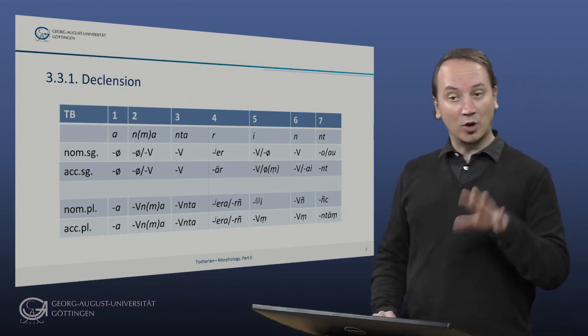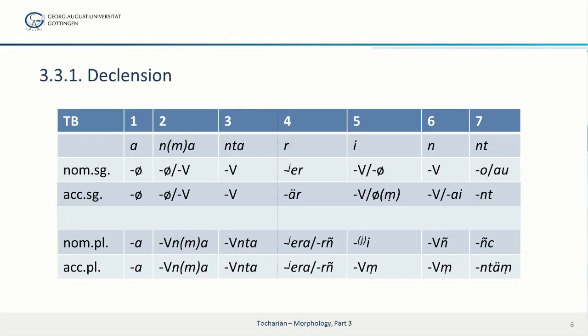So now let's turn to the non-neuter classes. Class four is the r-class, largely consisting of the old inherited Indo-European kinship terms.